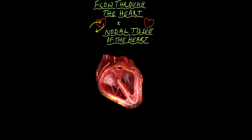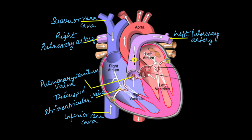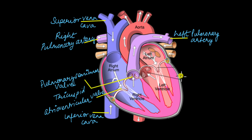We will start with the flow of blood through the heart by visualizing an image of the heart. The heart has four chambers: the right atrium, the right ventricle, the left atrium, and the left ventricle. The right side of the heart is for deoxygenated blood, whereas the left side of the heart is for oxygenated blood.